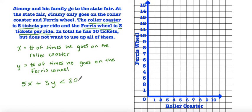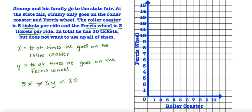It would only be less than or equal to 30 if he was planning on using up to 30 tickets. But he does not want to use all of them, meaning he could use up less than 30 tickets. So here we have our inequality — x represents the number of times he goes on the roller coaster and y represents the number of times he goes on the Ferris wheel.